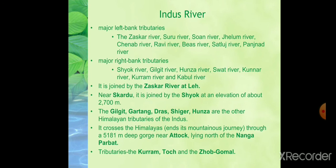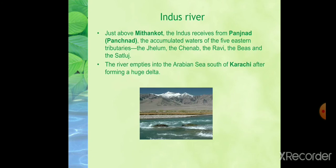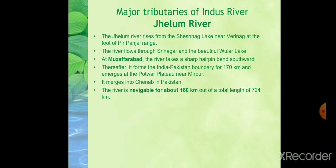The Indus River is joined by the Zaskar River at an elevation of about 2,700 meters. Gilgit, Gartang, Ras, Shigar, and Hunza are the other Himalayan tributaries of the Indus. It crosses the Himalayas through a 5,181 meter deep gorge near Attock, lying north of Nanga Parbat. Tributaries after Attock are Kurram, Tochi, Gomal, and Zob. Just above Mithankot, the Indus receives from Panchnad the accumulated waters of five eastern tributaries. The river empties into the Arabian Sea near Karachi after forming a huge delta.